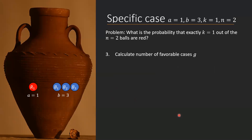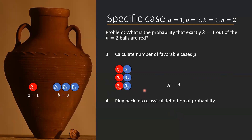We move on to calculate the number of favorable cases. We saw that we had three cases where we had exactly one red ball, which is a favorable event, so g equals 3. Applying this back into the classical definition of probability, we see that there is a 50% chance that one ball is red, given that we take out two balls randomly from the urn.